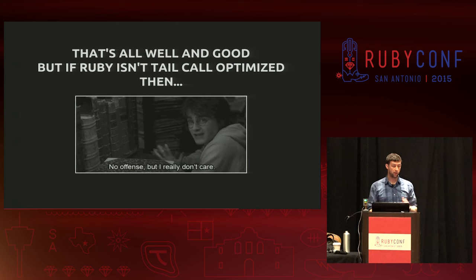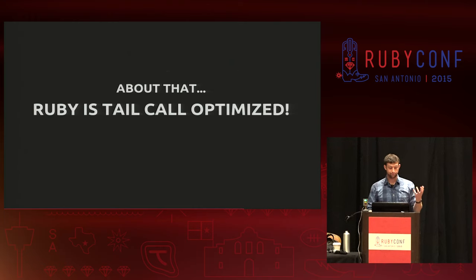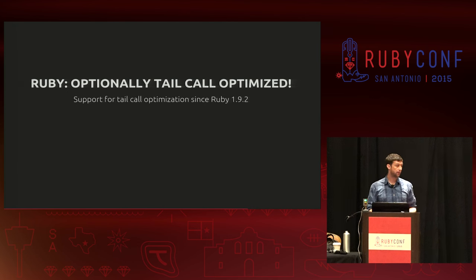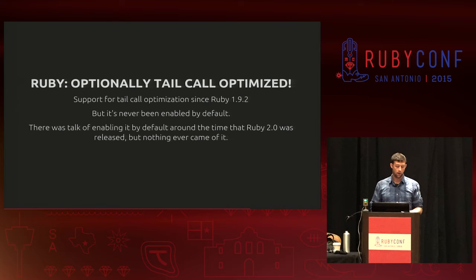Ruby is tail call optimized — sort of. It's actually been built into the YARV VM since Ruby 1.9.2, but it's never been enabled by default. There was some discussion of enabling it by default around when Ruby 2.0 came out, but nothing ever came of it. So let's look at how we can get in there and play with it.